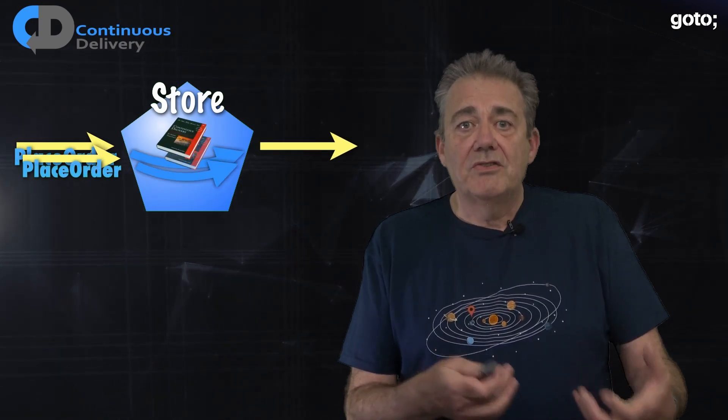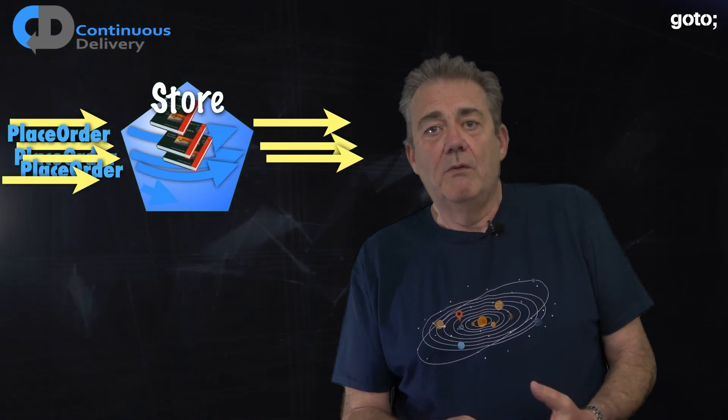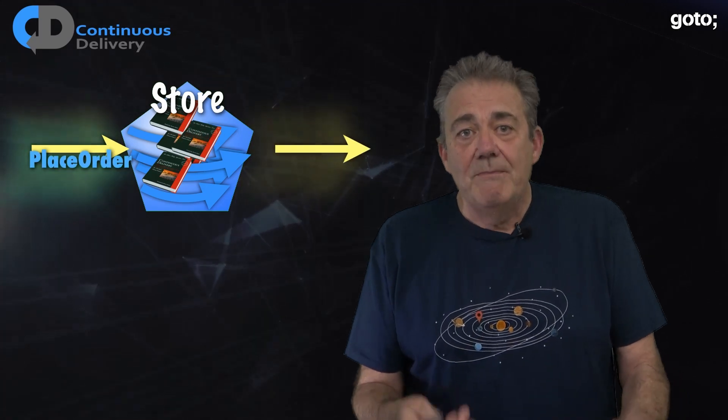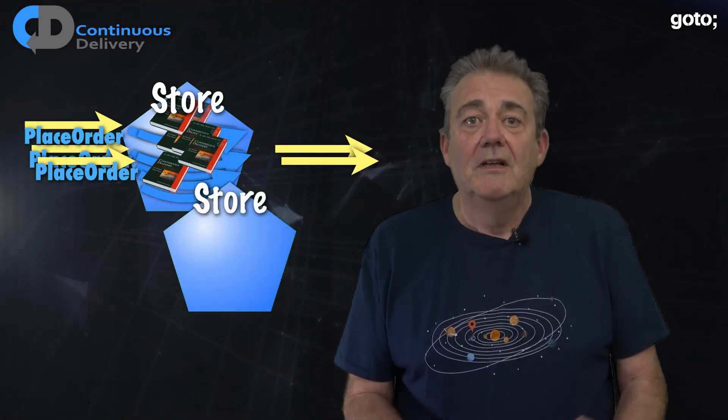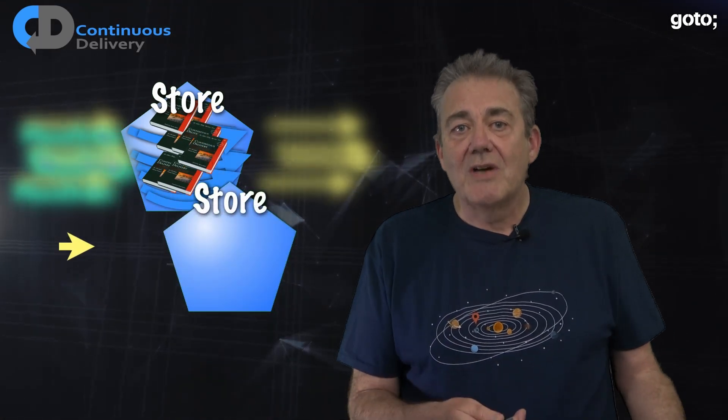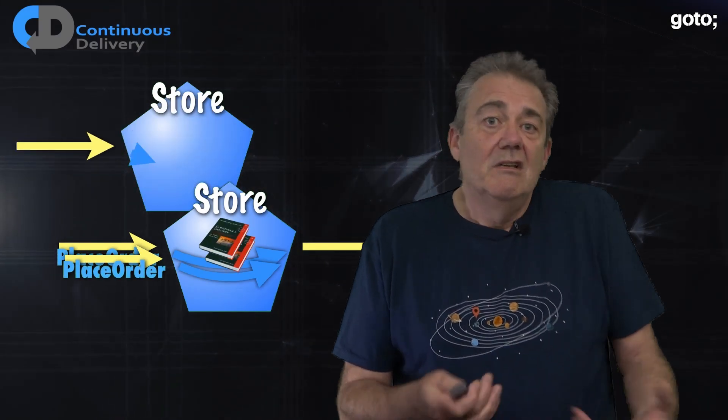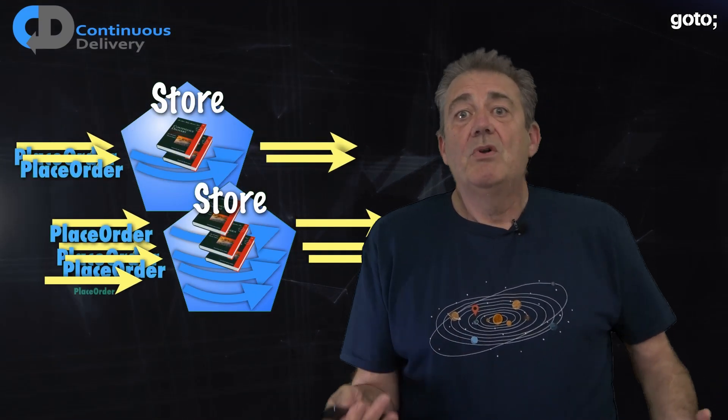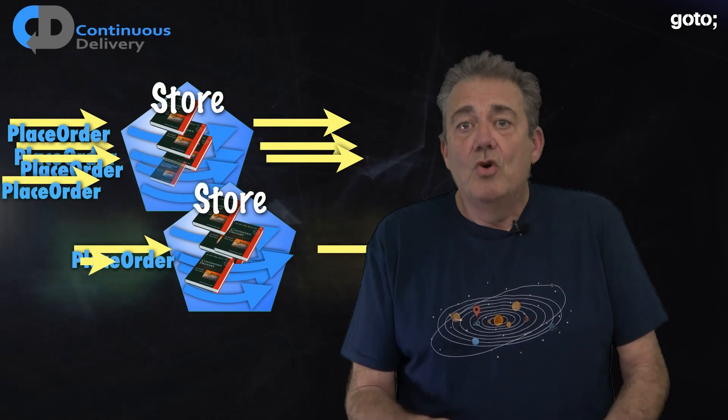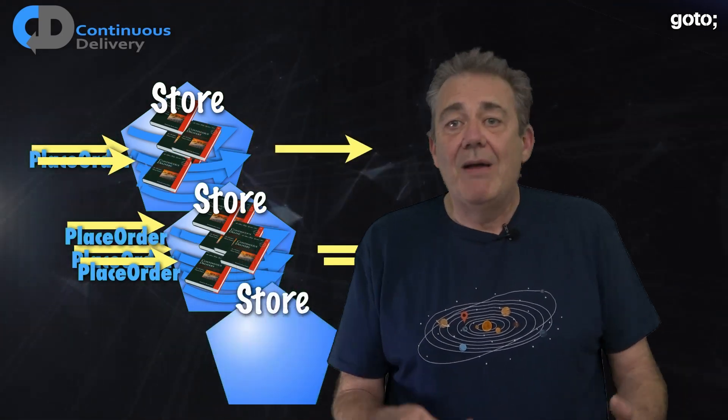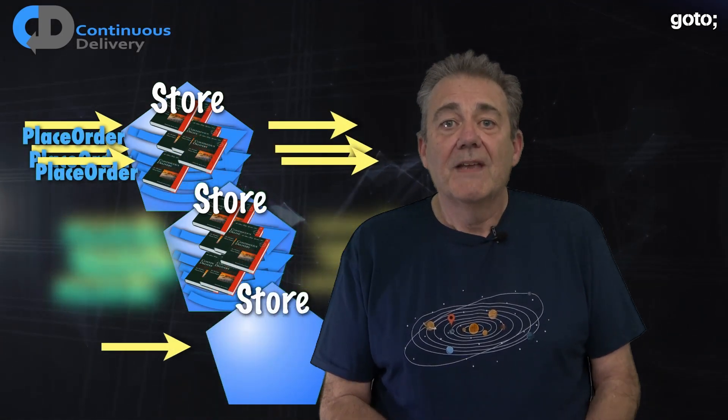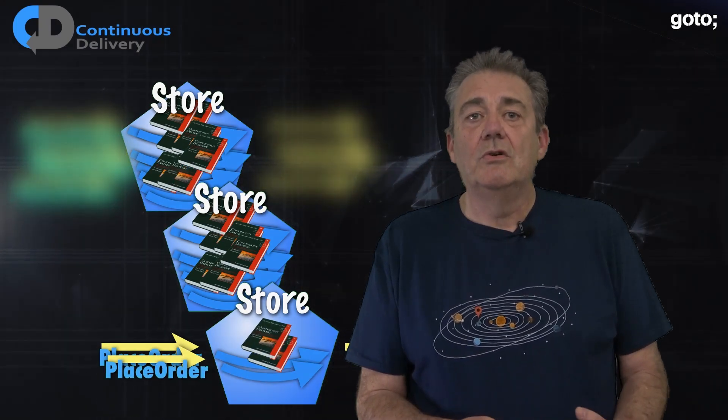What about changes in load? Well, let's imagine that these books are so popular that the store can't keep up. I wish that were true. Then we could simply create another store. We could choose a variety of strategies to allocate load between our stores, but all of them don't need the store itself to care about how any of that works. It's outside the view of the store.